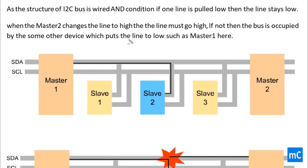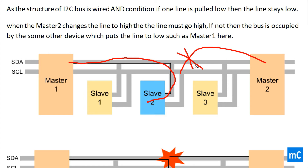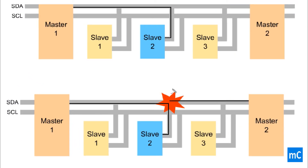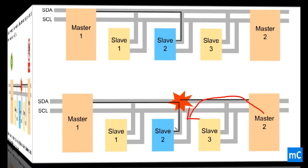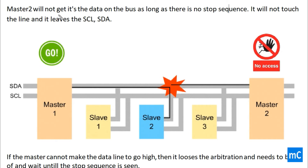To explain it simply: Master 1 accessed Slave 2, so Master 2 cannot access Slave 2. This is controlled by the physical setup of the I2C bus, i.e., wired-AND configuration. Master 2 cannot access Slave 2 until Master 1 releases it. Master 2 will not get its data on the bus as long as there is no stop sequence — it will not touch the line and leaves the SCL and SDA until the stop sequence is observed.